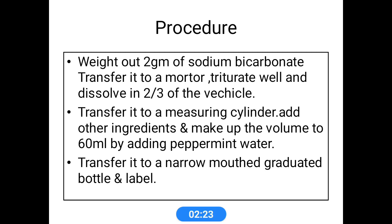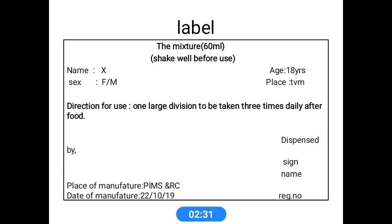For both these mixtures, we use the narrow graduated bottle method. Then label the bottle. The label format: first write the mixture and quantity — here we are making two doses so write 'Mixture 60 ml' — and 'Shake well before use' as the indication. Then write the patient's details: name, sex, age, and place. Select an adult patient. Direction for use: one large division to be taken three times daily after food. Write the place of manufacturing, date of manufacturing, dispensed by, your sign, name, and register number.